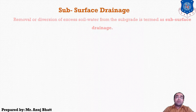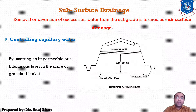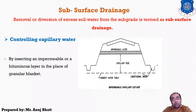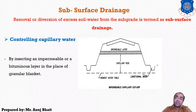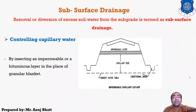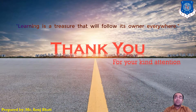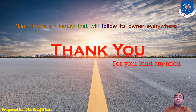Another method of providing the capillary cutoff is by inserting an impermeable layer or bituminous layer in place of the granular sub-base course. At that particular layer, one more layer — either an impermeable or bituminous layer — is added so that capillary rise water cannot enter from that layer. This is how we can provide subsurface drainage. With that, I am concluding this lecture. I hope you understand the topic thoroughly. Thank you for your kind attention; we'll see you in the next lecture.